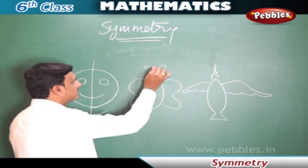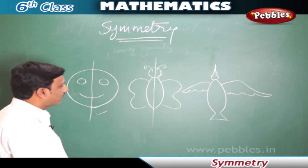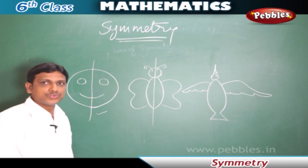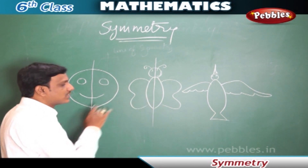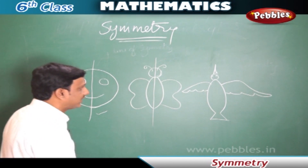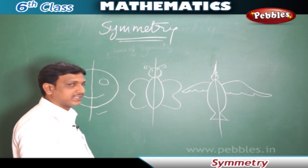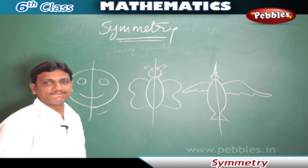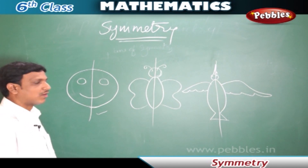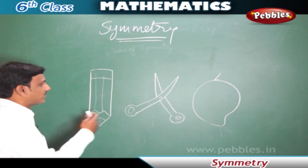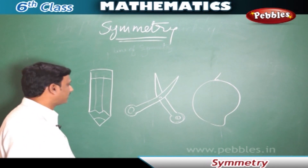In the same way, this butterfly — by drawing a vertical line we can make the figure into two identical parts in which both parts coincide with each other. And even the third picture here also shows symmetry. The line which divides the figure into two identical parts is called the line of symmetry or axis of symmetry.